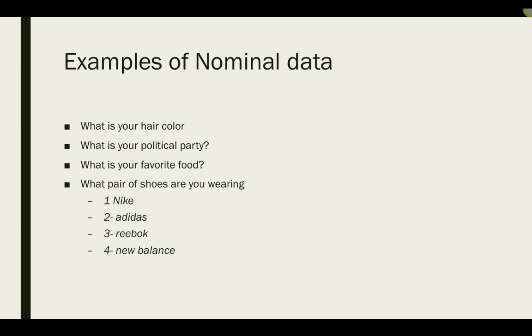For example, nominal data classifies variables into different categories, but there's no standard order or implied ranking to these categories, such as what is your hair color, or political party, or favorite food, what pair of shoes are you wearing right now based on brand.